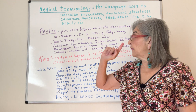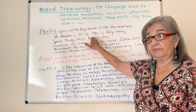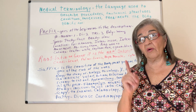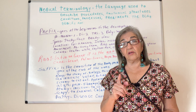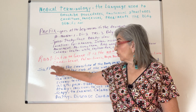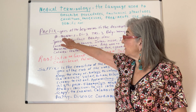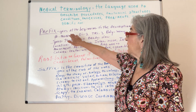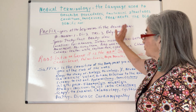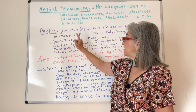You break it down. Prefixes usually go at the beginning — though not necessarily, because in 'cardiomyopathy' the root word is at the beginning. The prefix usually does the description: how many? Is it a number? 'Mono' means one, 'di' means two, 'tri' means three, and 'poly' means many.